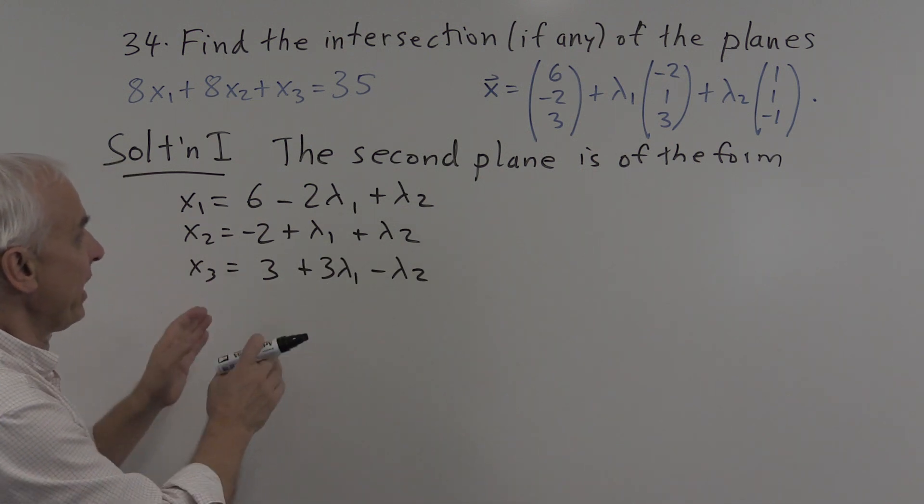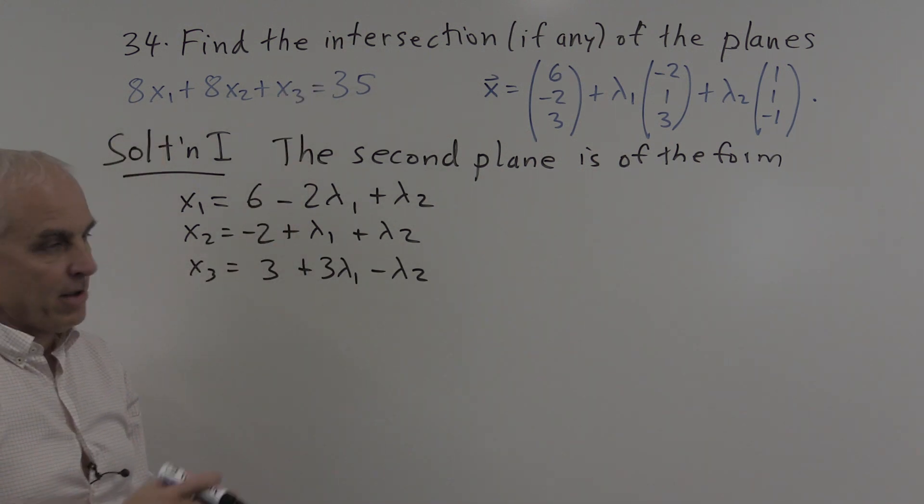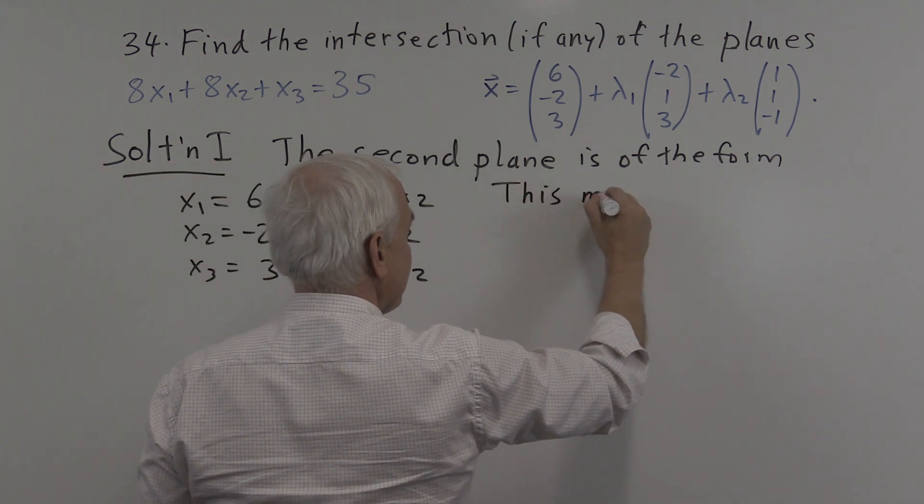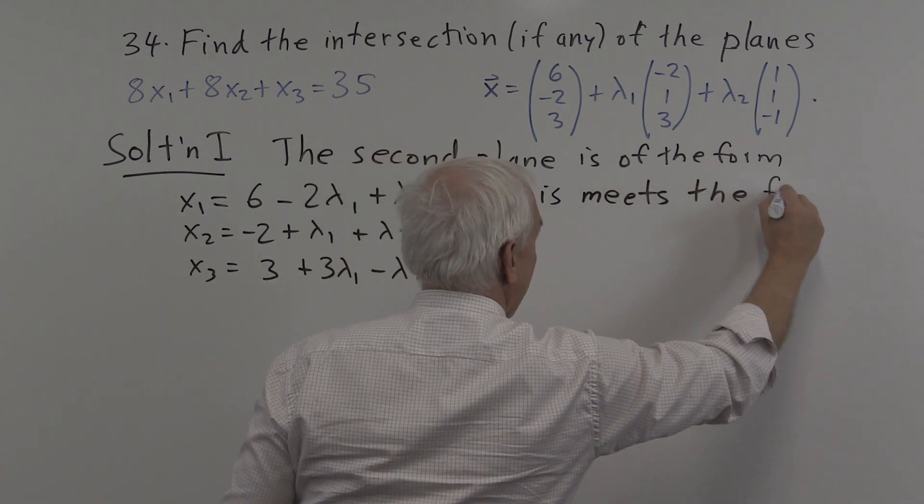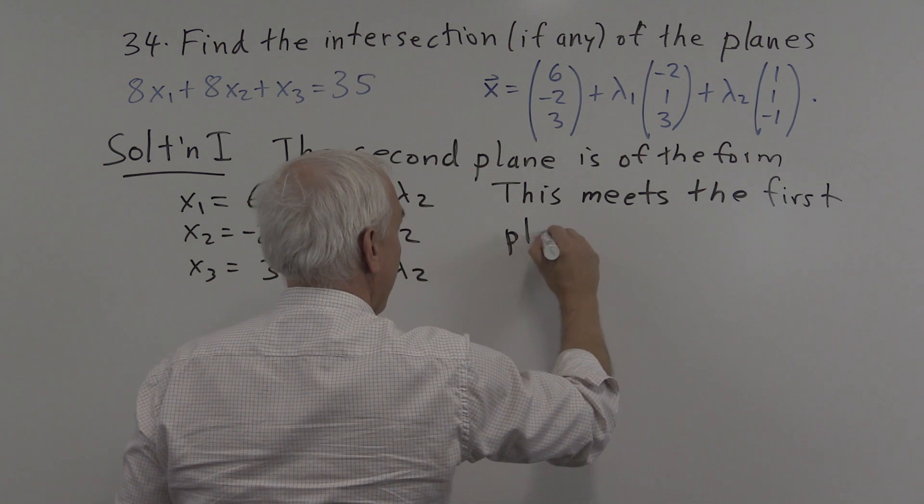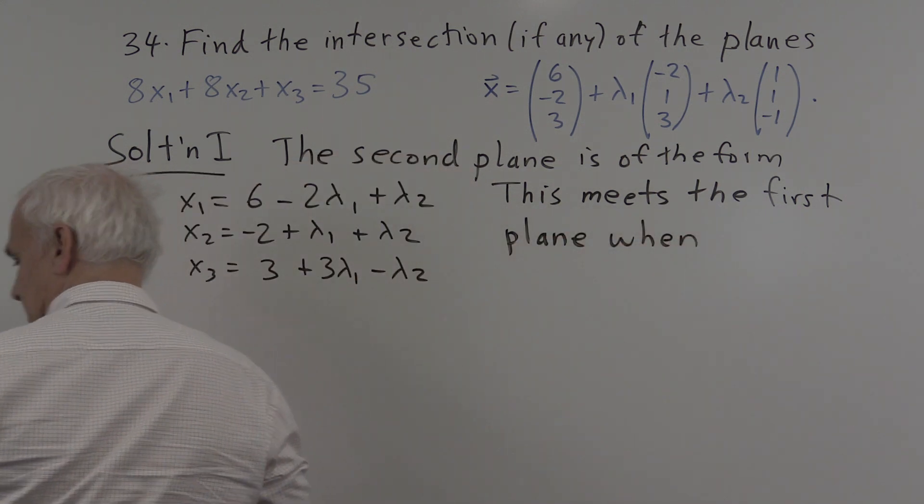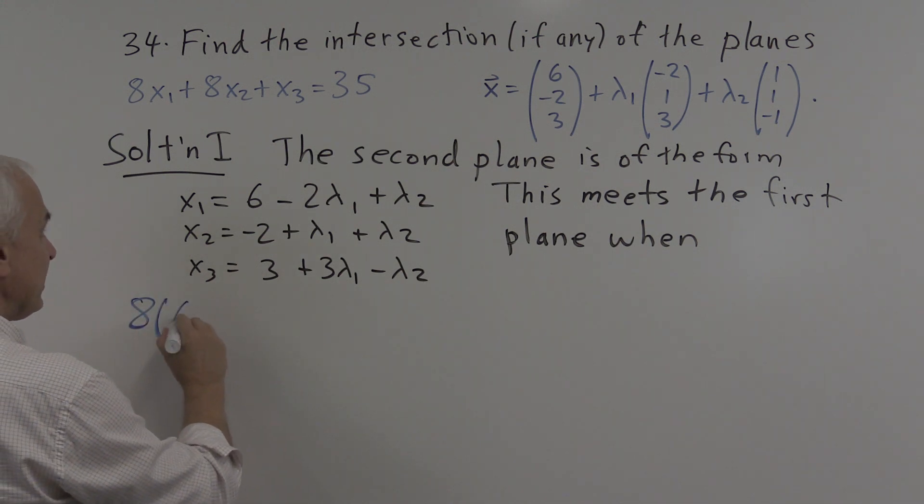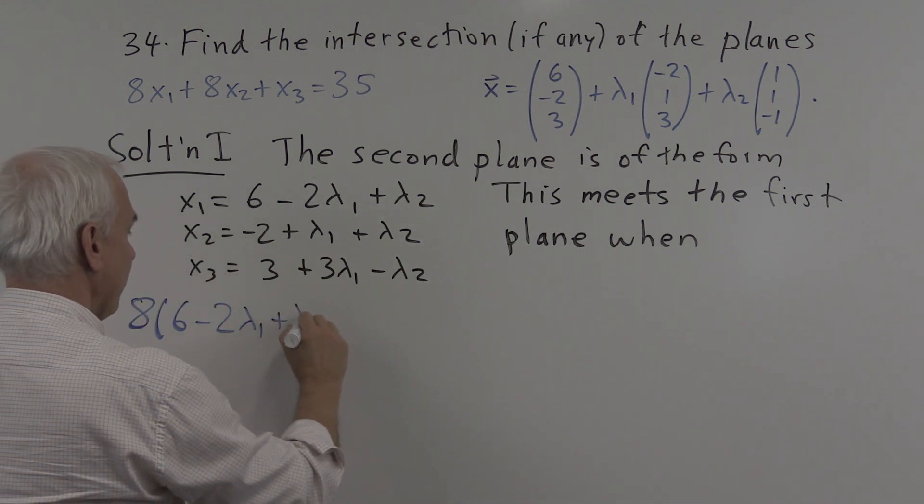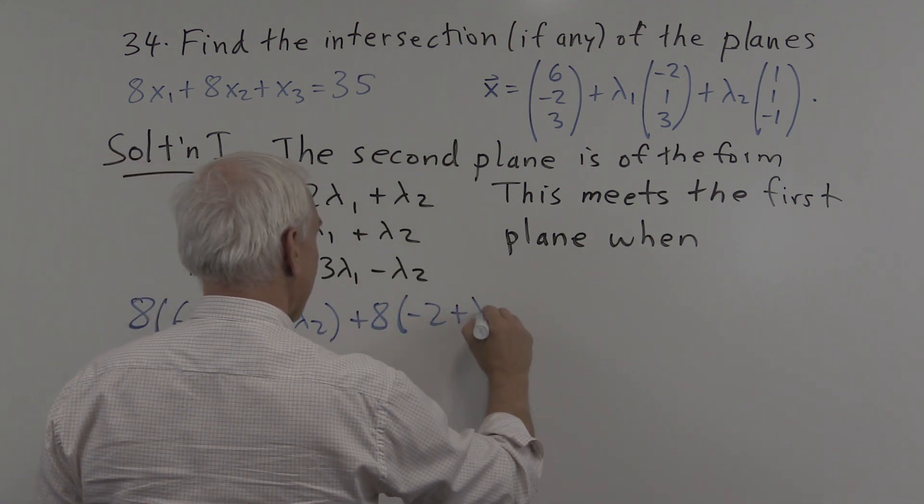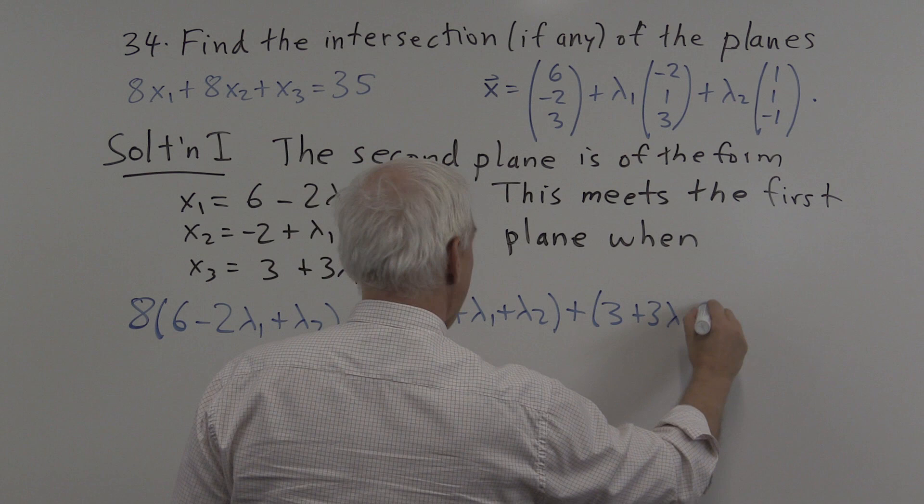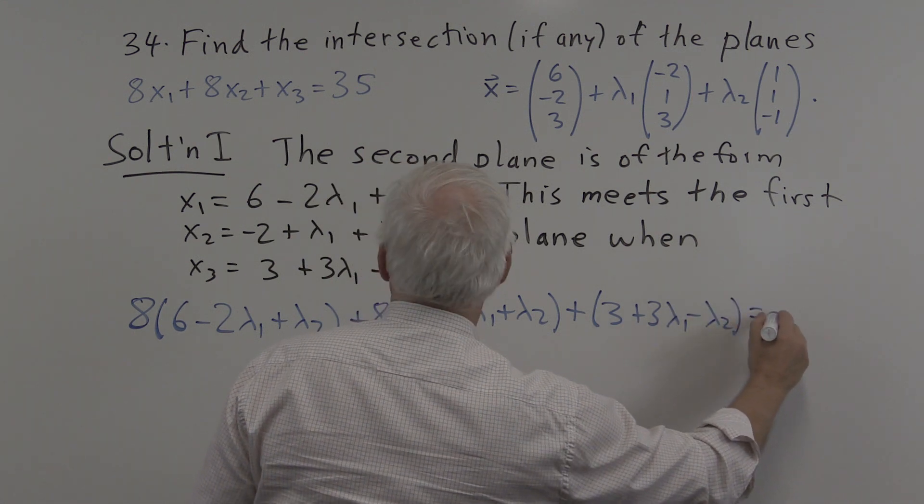So such a point on this plane will intersect with this plane precisely when these three quantities satisfy this relation. So this meets the first plane when I'm going to plug these values into here. So I'll write it here. 8 times 6 minus 2 lambda 1 plus lambda 2 plus 8 times minus 2 plus lambda 1 plus lambda 2 plus 3 plus 3 lambda 1 minus lambda 2 equals 35.